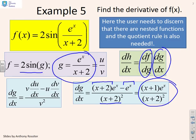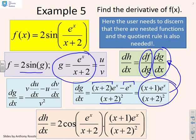dg/dx is x plus 1 e to the x over x plus 2 squared. And now I can put this into my chain rule. So I get dh/dx equals 2 cos of e to the x over x plus 2, times x plus 1 e to the x over x plus 2 squared. And if you're just wondering what's going on here, this particular term here is of course the derivative. So I've done d/dg of f.